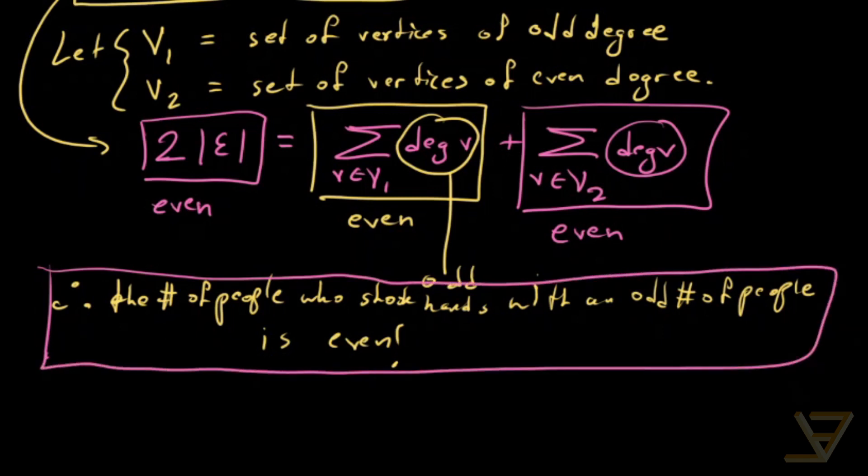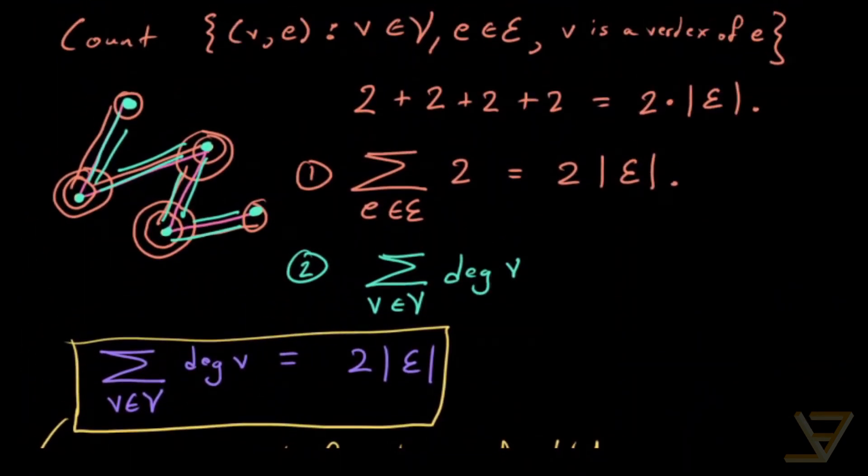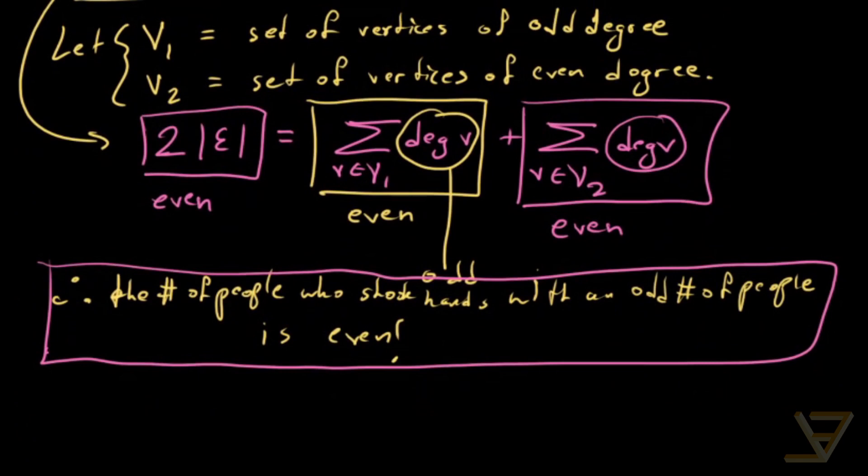So let's go back to our original graph just to check that it's true. Let's check the degrees. The degree of this one is one, the degree of this is two, this is two, this is two, and this is one. If we look at the odd, the number of vertices with odd degree, there's two of them, which is in fact even. So the conclusion that we derived does hold in this case, and of course it holds in general.